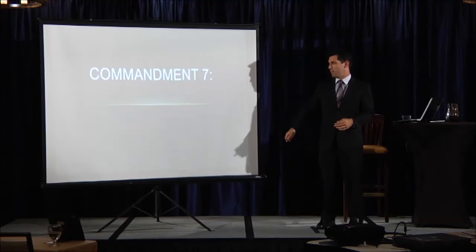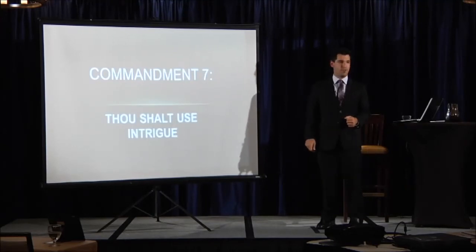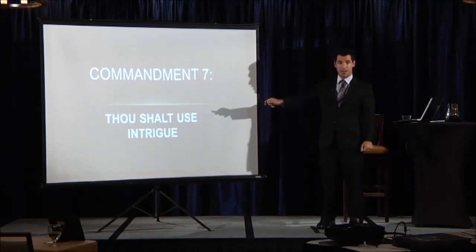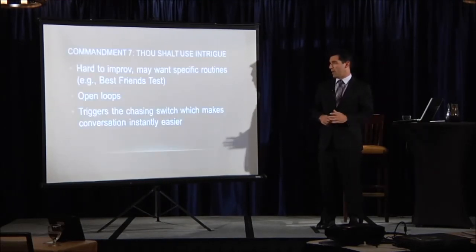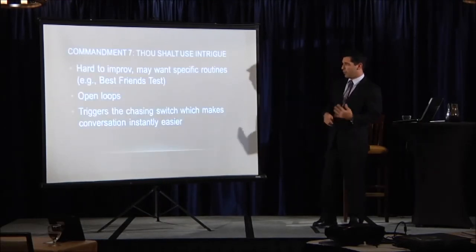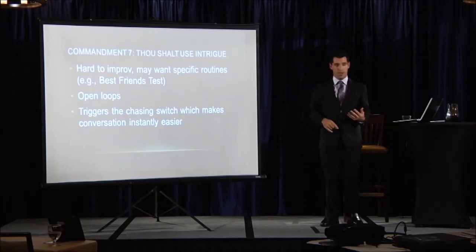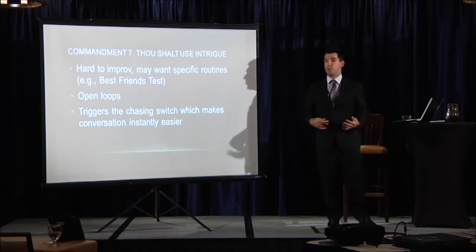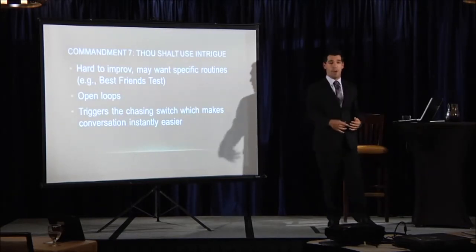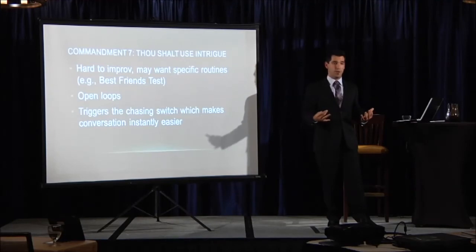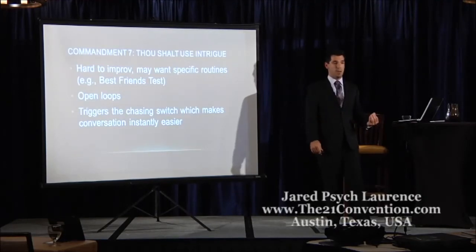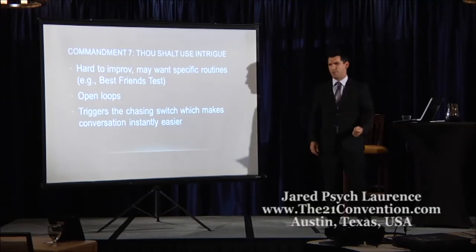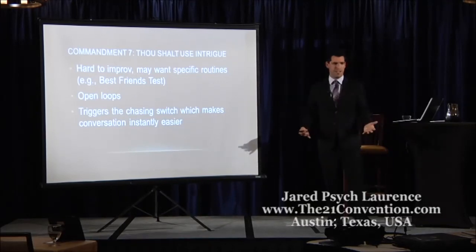Commandment number seven: thou shalt use intrigue. This done correctly is deadly. This will almost always turn a different set around. Now the problem is it's really hard to improv intrigue type stuff. You may want to use some routines that bank on this. An oldie but a goodie - one of the most famous ones was the best friends test. How does that get them opened up? Why was that used right off the opener? Because it's intriguing.